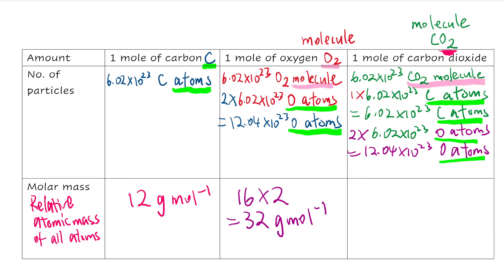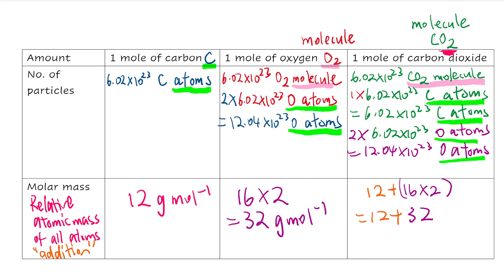For carbon dioxide CO2: carbon has a relative atomic mass of 12, and oxygen is 16 but there are two of them, so 16 times 2 = 32. You add them together: 12 + 32 = 44 grams per mole for CO2.